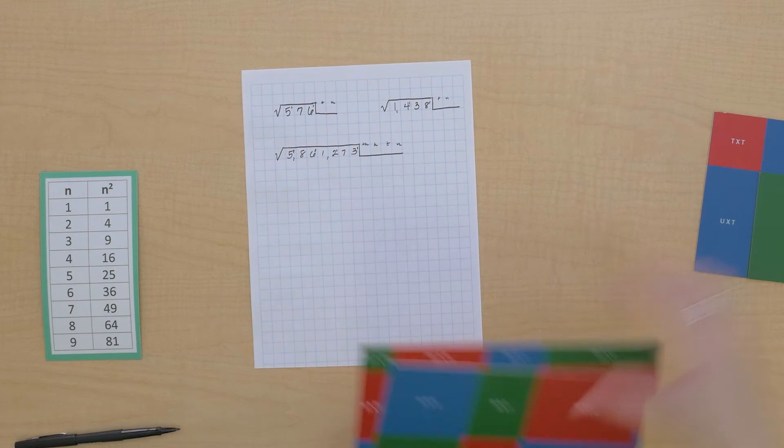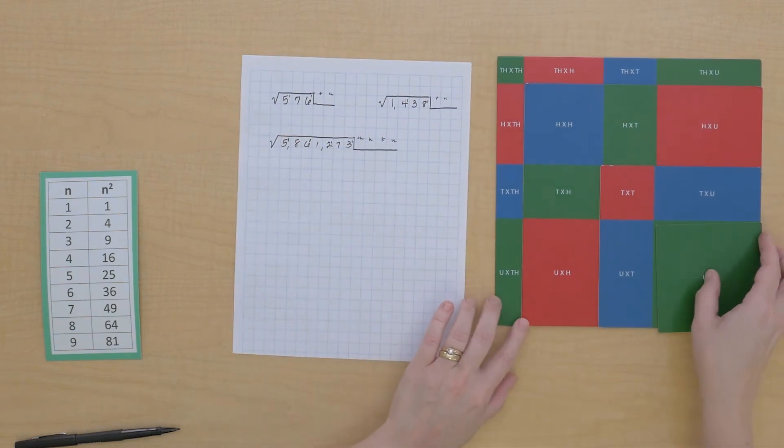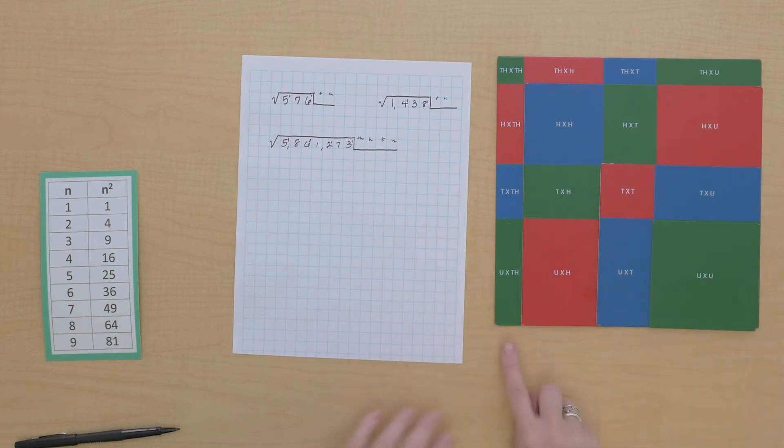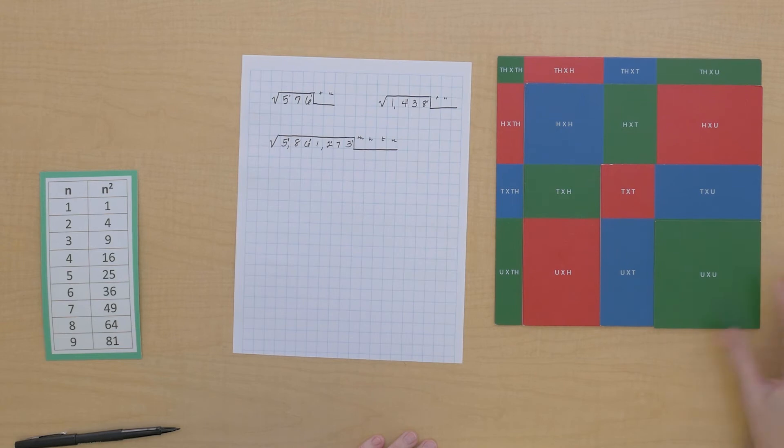And I've got a guide square for that as well. So we can see here what a four digit square will look like. With the thousands, hundreds, tens, and units squares.